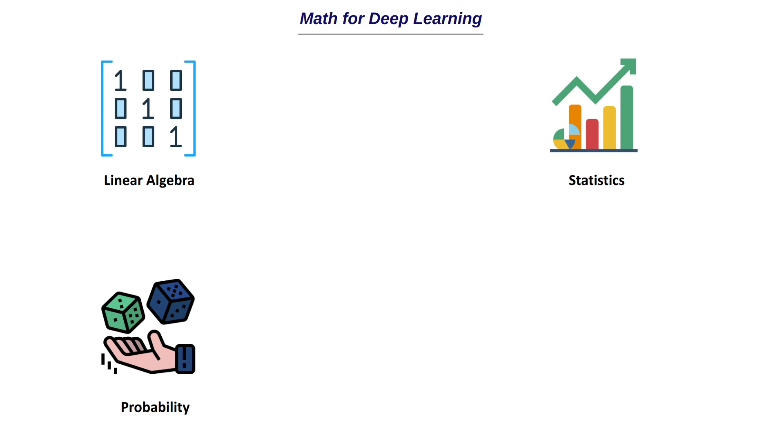It would say what's the probability that this particular image belongs to this class or that class. So it's important to understand probability, all those probability functions and all the distributions that we have.